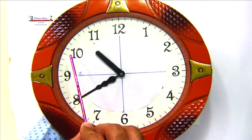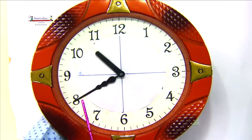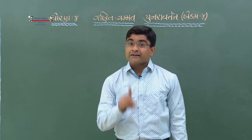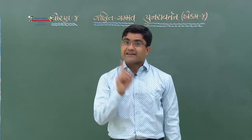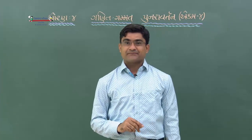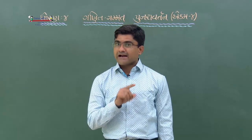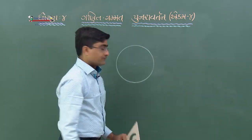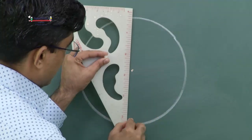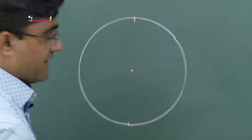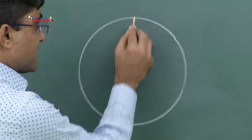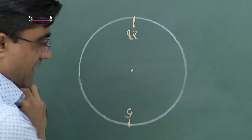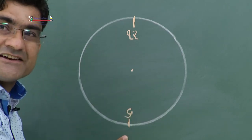ઘડિયાળ દોરવા માટે એક વર્તુળ દોરવું પડશે. ત્યાર પછી તેના કેન્દ્રમાંથી આ રીતે કોઈ પણ જગ્યાએ બે કાપા દર્શાવી - આ બાર બતાવે છે અને આ કાપો છ બતાવે છે.